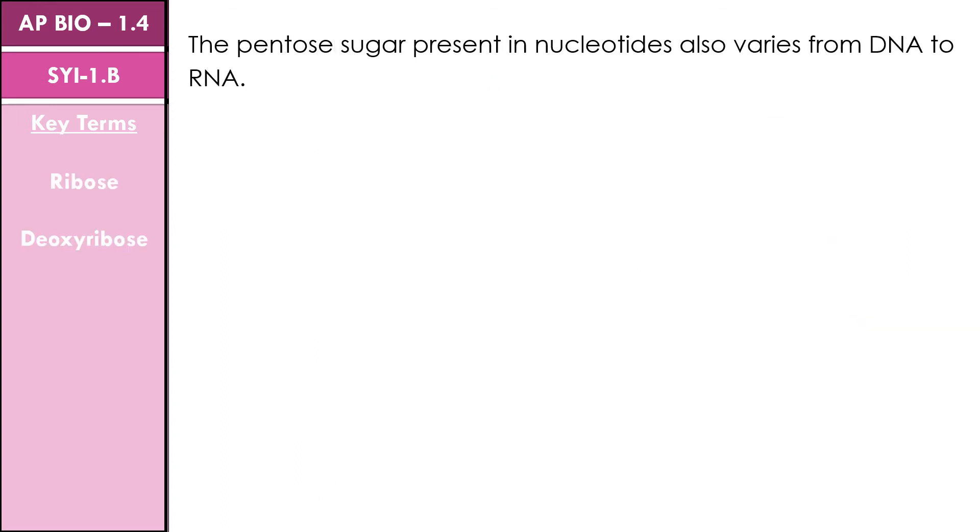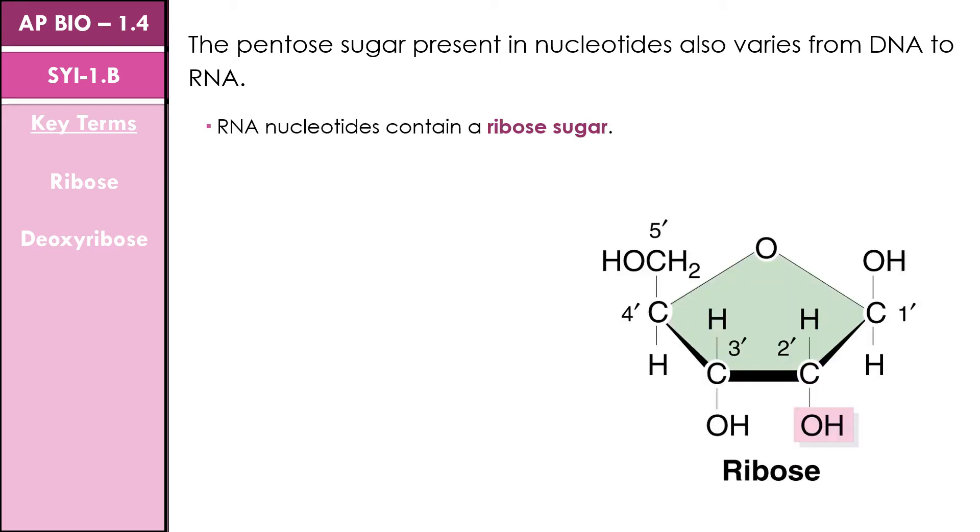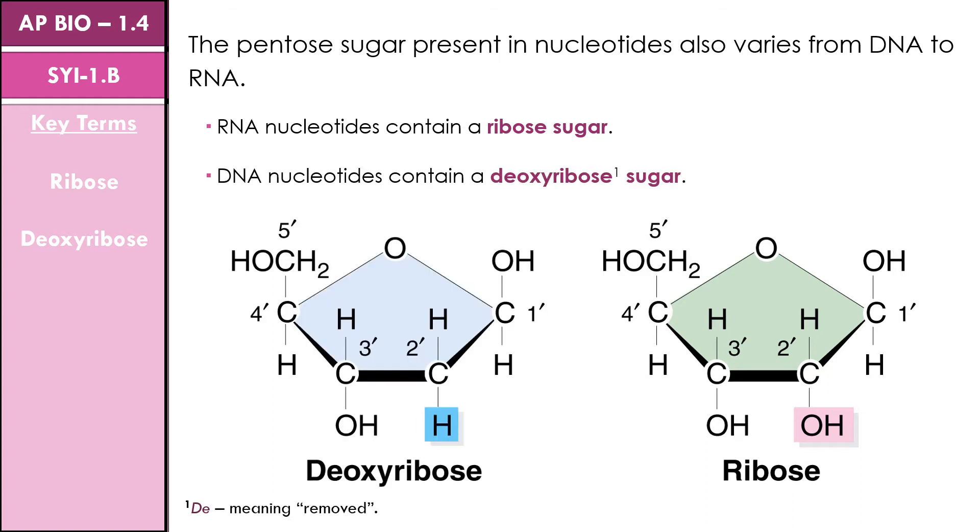The type of sugar found in a nucleotide also differs between DNA and RNA. In RNA, the pentose sugar is called ribose, and in DNA, the pentose sugar is deoxyribose.